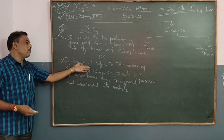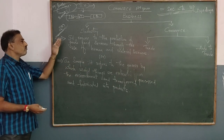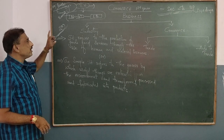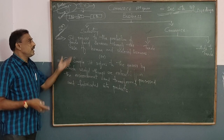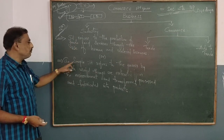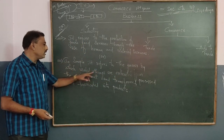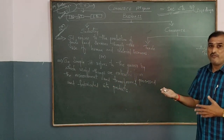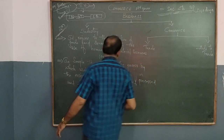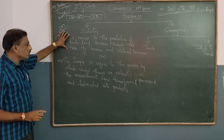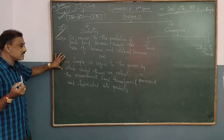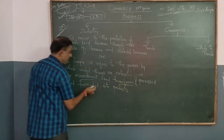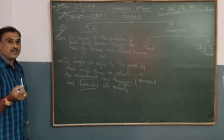Now I think you are very much clear about what is called an industry. For your exam, you can write either of the two definitions. The first definition: industry refers to the production of goods and services through the use of human and material resources. The second definition: it refers to the process by which useful things are extracted from the environment, transferred, transformed, fabricated, and processed into a product. The new words in the second definition are: environment, transform, and fabricated.